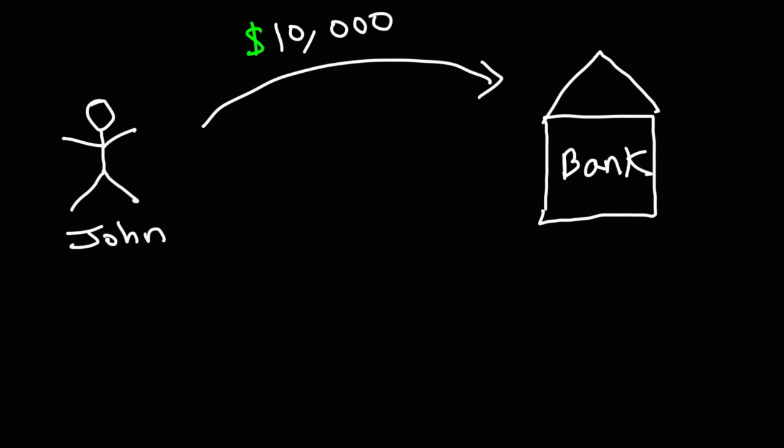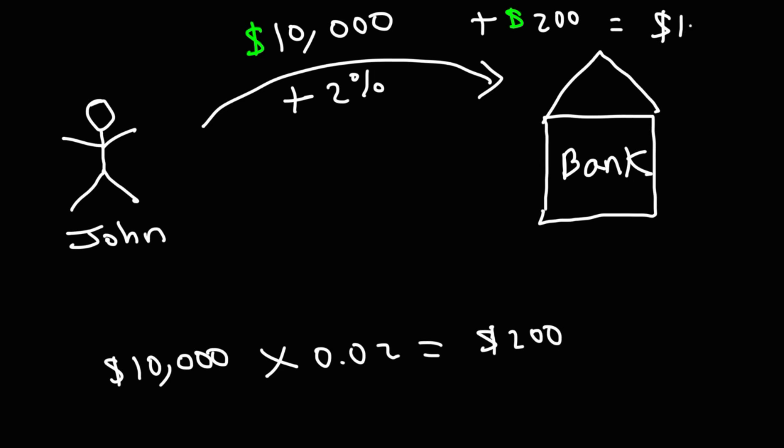And let's say we're in a positive interest rate environment. And in this savings account, the bank agrees to credit him with, let's say, 2% interest annually. So what's 2% of $10,000? This is $10,000 times 0.02. But if you want to do the math mentally, 10% of $10,000 is $1,000. 1% of $10,000 is $100. So 2% of $10,000 is $200. So after one year, John is going to receive an interest payment of $200. So after one year, his savings account will be worth $10,200.